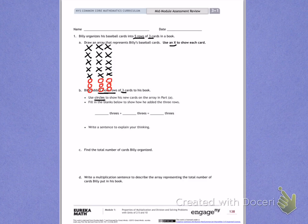Fill in the blanks below to show how he added the three rows. To start, Billy had five rows of three. So he had five threes. Then he added three rows of three. In total, the entire array has eight rows of three.